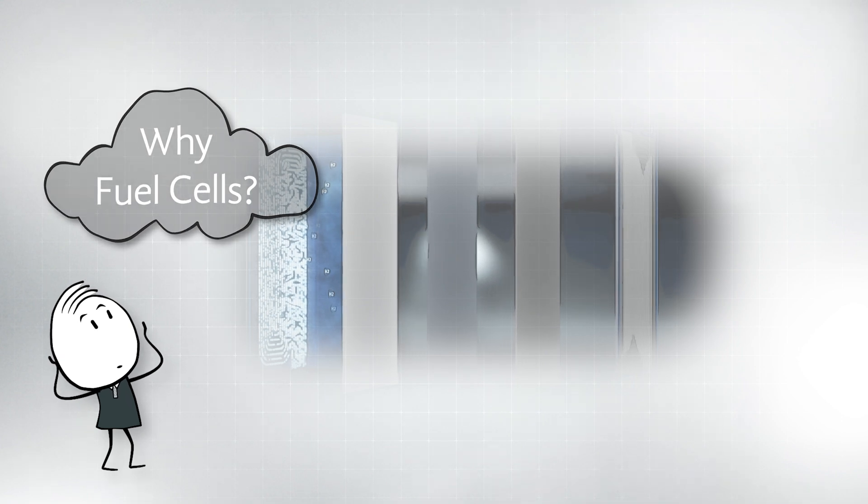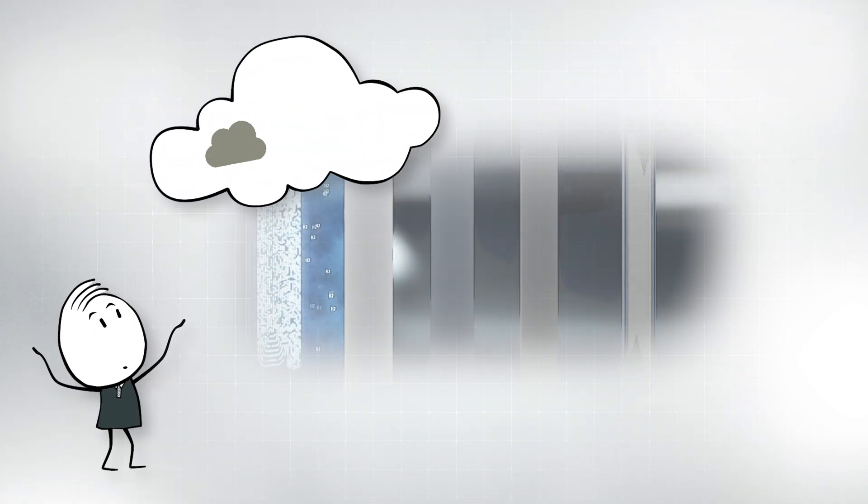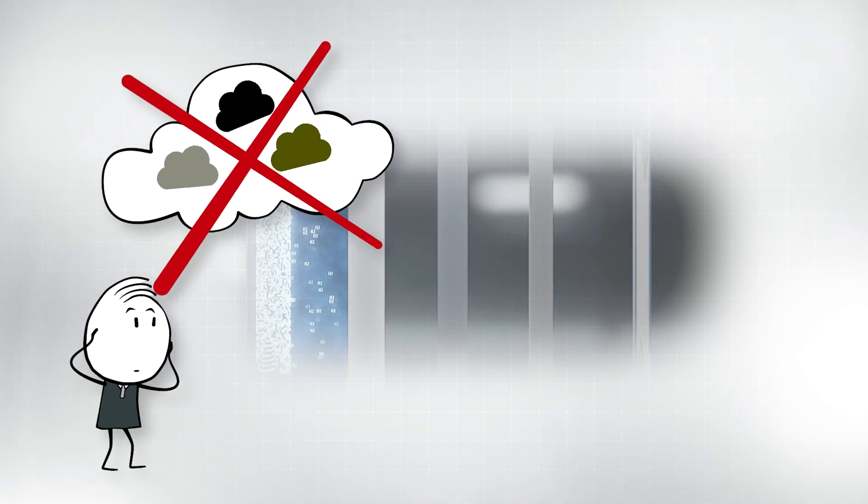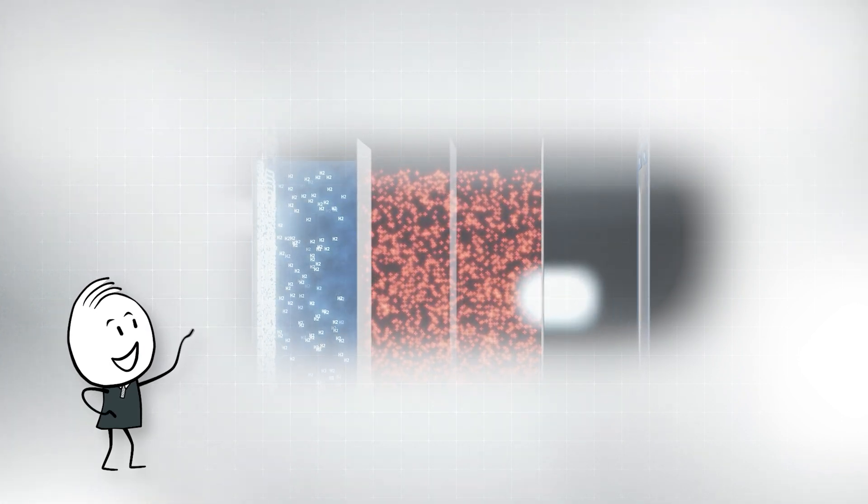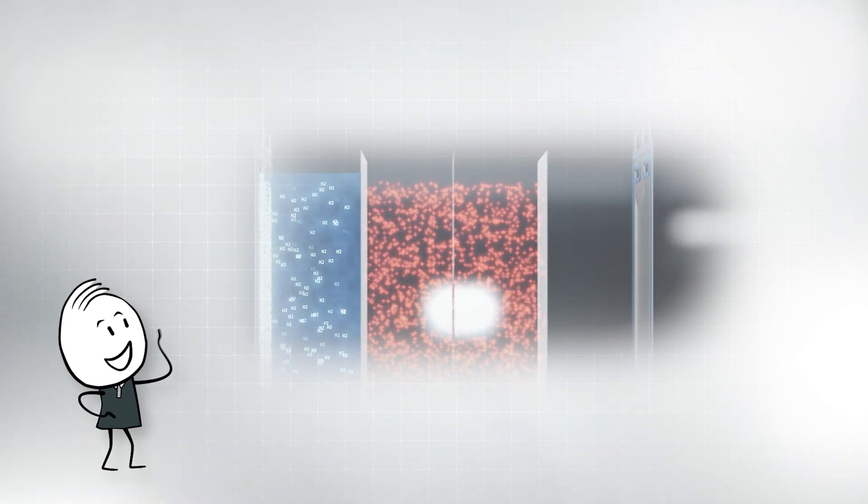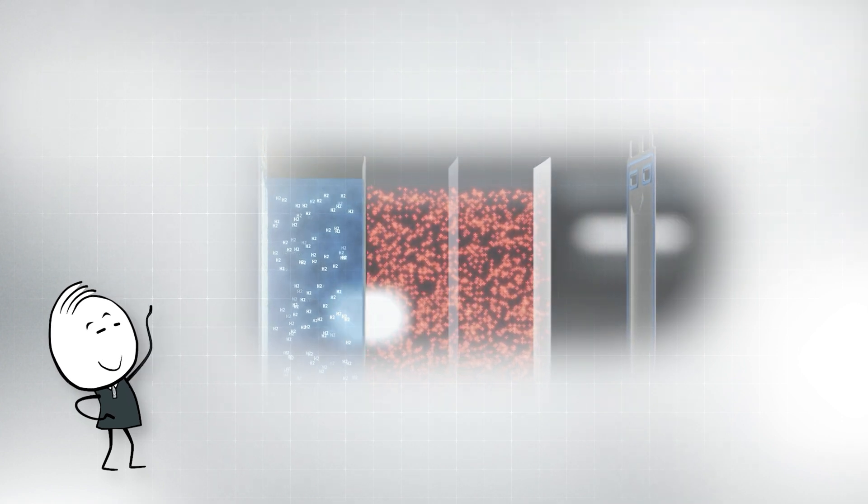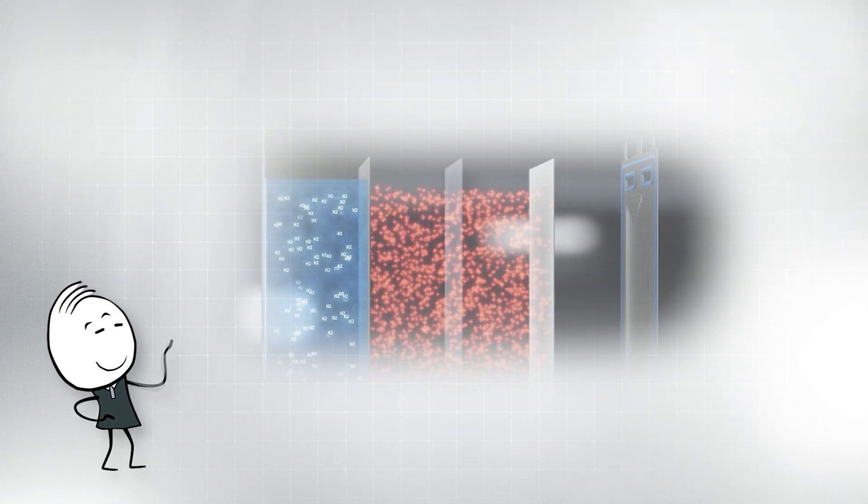Fuel cell power systems avoid harmful emissions such as nitrogen oxides, sulfur oxides and soot. They are virtually noise and vibration-free and ensure long-term reliability and increased performance. When cleverly combined with batteries, complete energy systems can be realized in a CO2-neutral way.